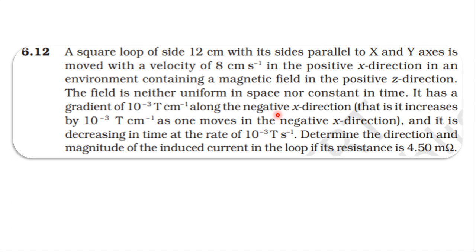The field has a gradient of 10 power minus 3 tesla per centimeter along the negative x direction, and it also decreases in time at the rate of 10 power minus 3 tesla per second. Find the magnitude of the induced current in the loop if its resistance is 4.5 milli ohm.